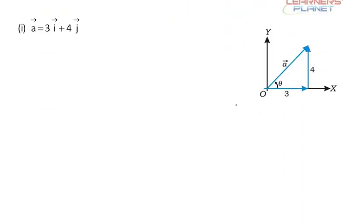Now the first problem is given as a vector equal to 3 i cap plus 4 j cap. So this vector has got a component of 3 units in the x direction and 4 units in the y direction.